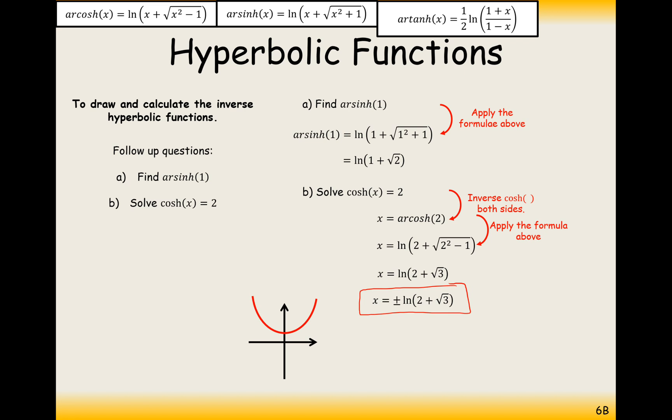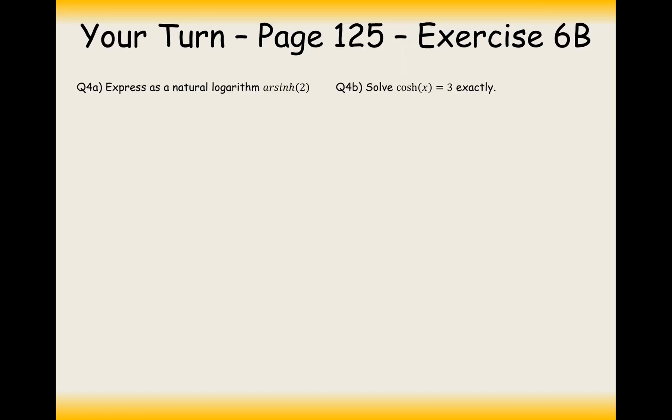Now, you won't need to do that for sinh, because that's a one-to-one function here. The inverse didn't need to be restricted, and it didn't need to be restricted for tanh as well. So this plus minus here only needs to be used when you're doing a cosh x equals 2 question. Okay, so your turn to have a go at some questions from the textbook then. Pause the video and give these two questions a go.